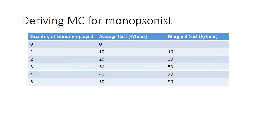For three workers, if the average cost is £30, total cost is £90 (30 times 3). The difference between total cost of £90 and total cost at two workers of £40 is £50 — that is the marginal cost. So the marginal cost for labour is upward sloping. Notice that the marginal cost is rising at twice the rate of the average cost: average cost goes up in 10s, marginal cost goes up in 20s. That is a rule you can apply — marginal cost rises at twice the rate of average cost.